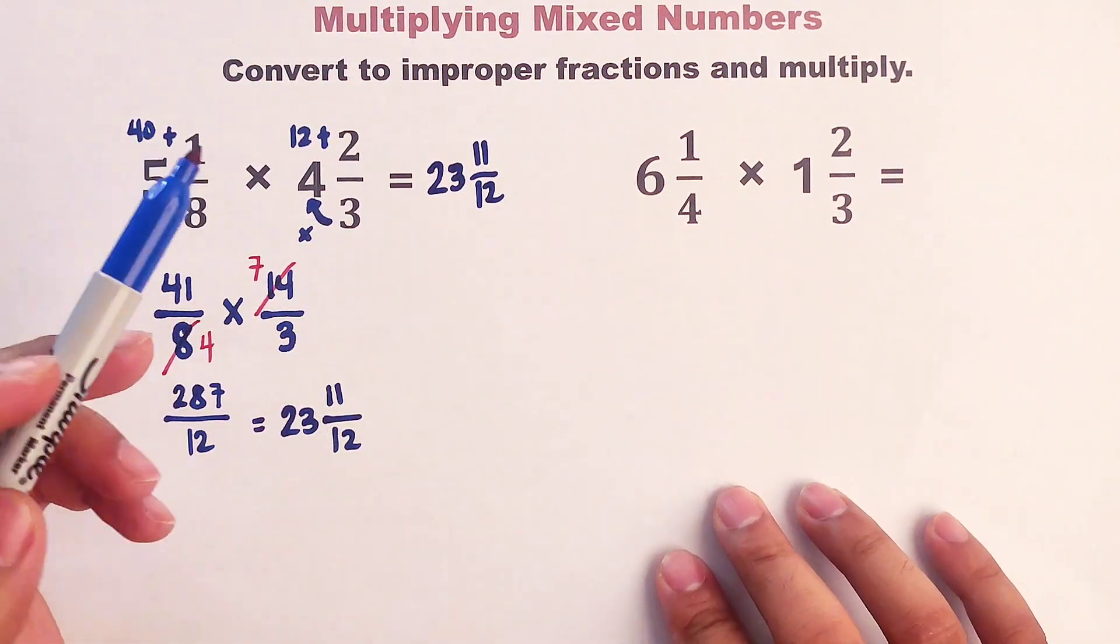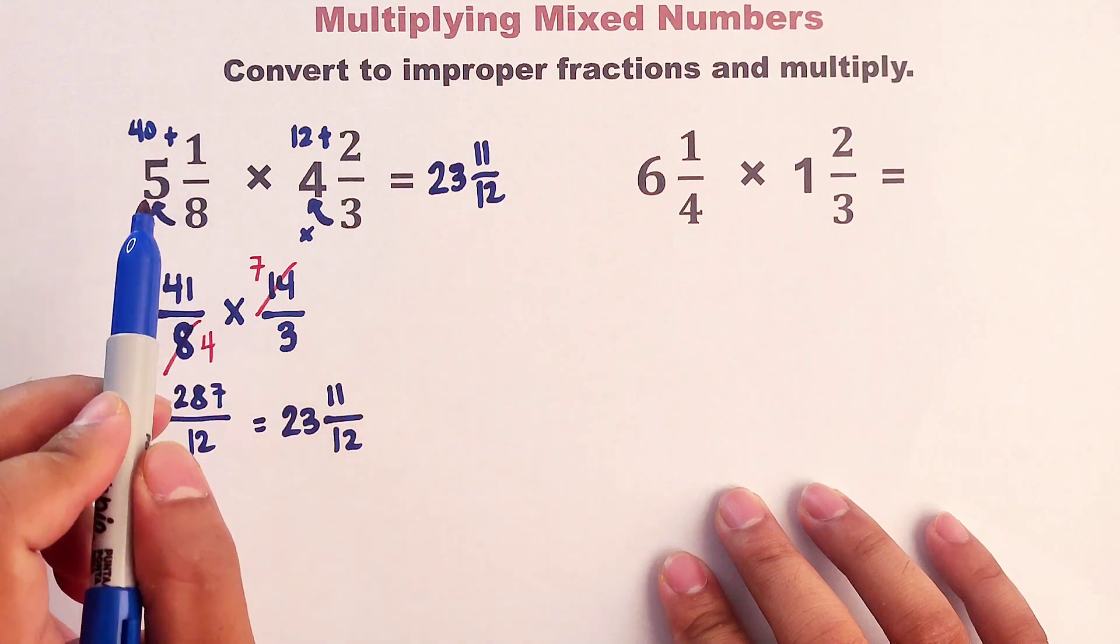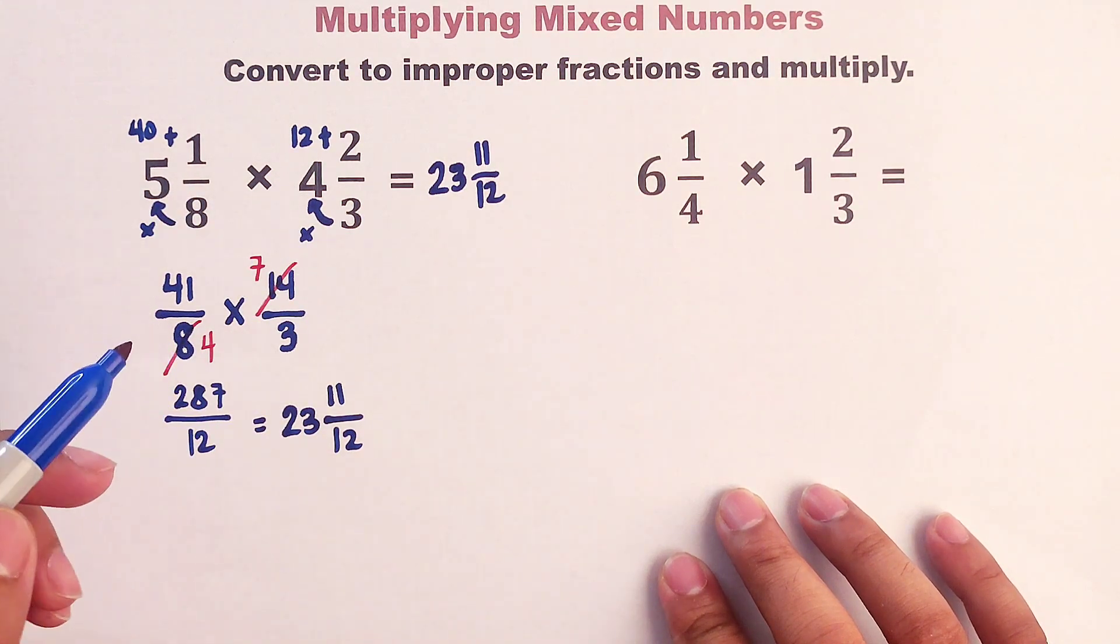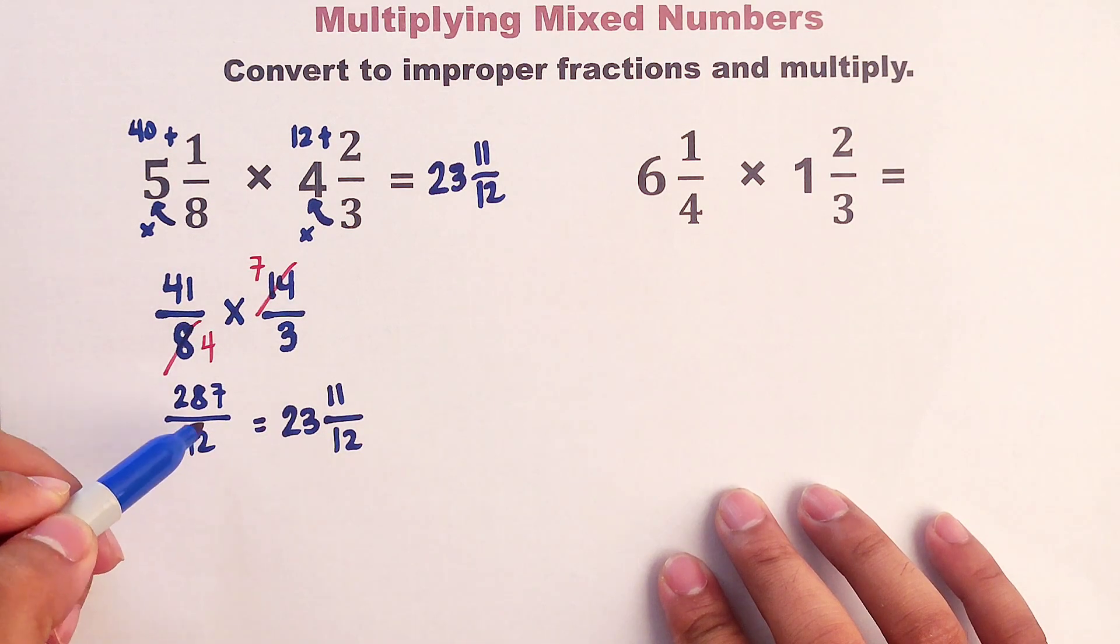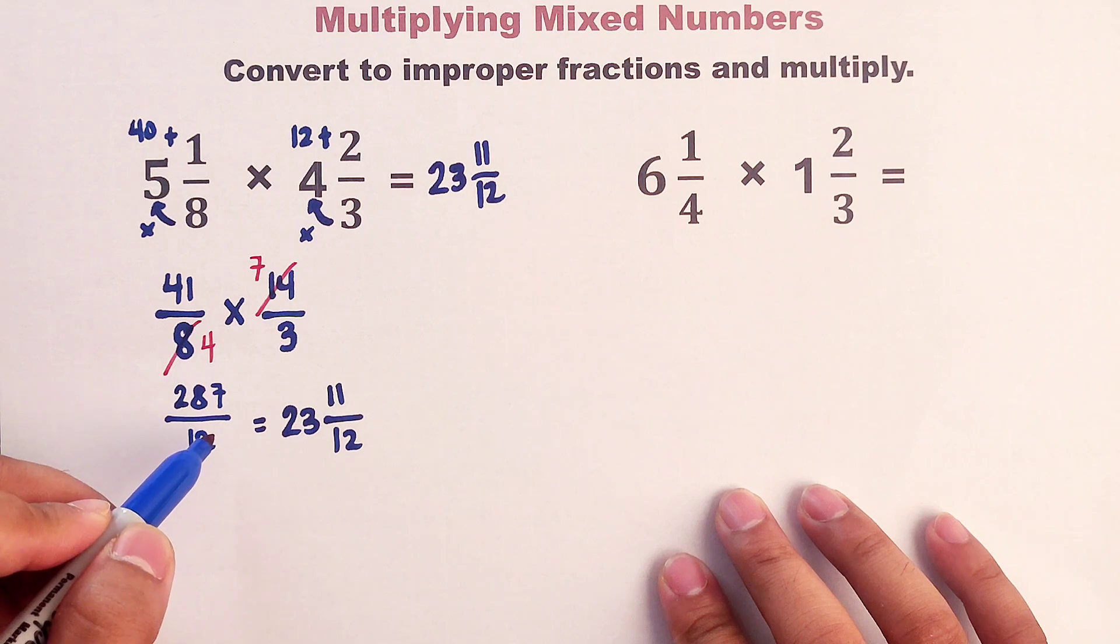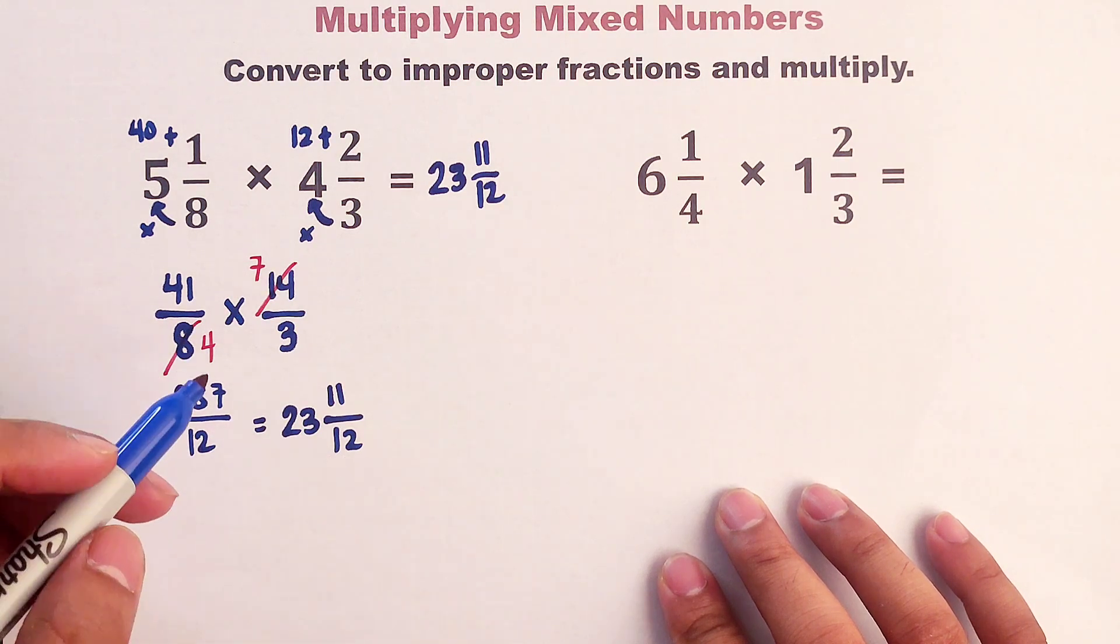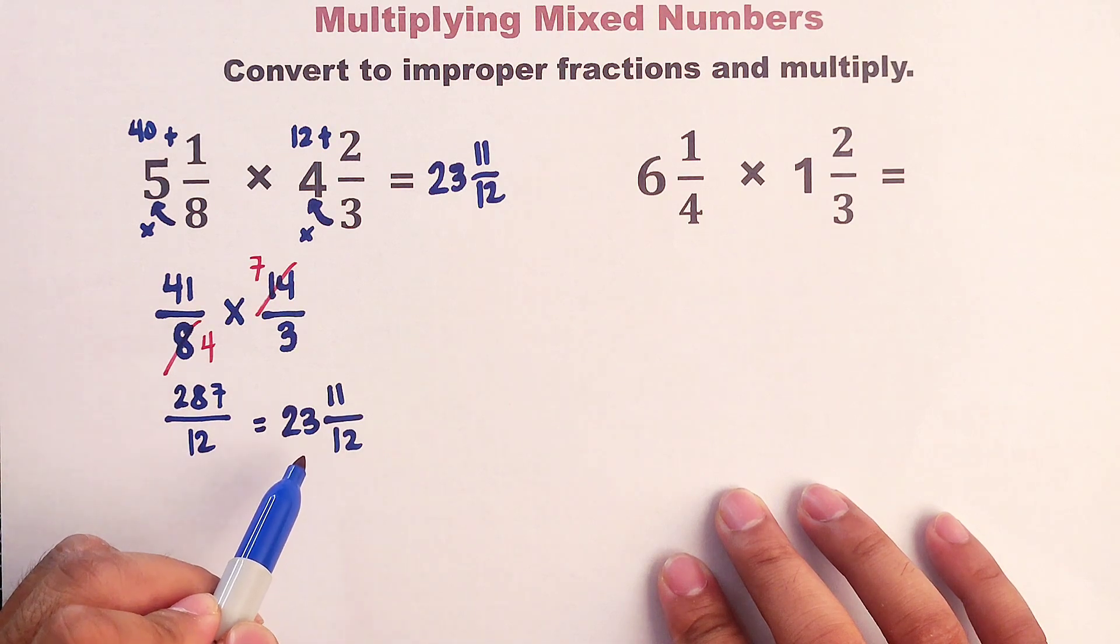Now guys, so recap lang tayo. First, you need to convert these mixed numbers to improper fractions. And then you can multiply. You can use cancellation method to avoid bigger numbers. And after multiplying, you will convert the improper fraction to mixed number. So I skipped the long division. You can do it on your own. And this will be the answer.